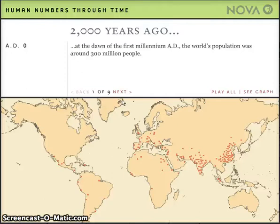We're looking at a map of human population growth rates over time. This map begins at the beginning of the Common Era, which was about 2,000 years ago.